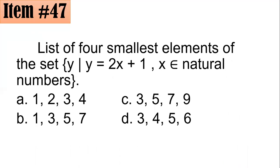47. List four smallest elements of the set Y such that Y is equal to 2X plus 1 where X is an element of natural numbers. Is it 1, 2, 3, 4, 1, 3, 5, 7, 3, 5, 7, 9, or 3, 4, 5, 6?